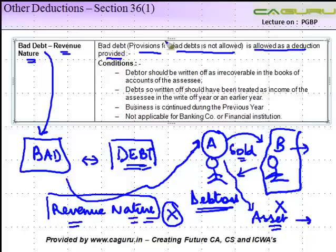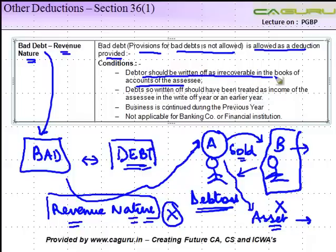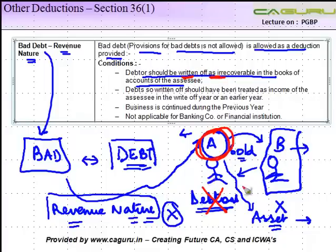So bad debts — provision for bad debts is not allowed. A provision for bad debt is nothing but a provision created in the books in case B does not pay up. What is allowed as a deduction is provided the debt should be written off as irrecoverable in the books of accounts of the assessee. Before A can claim a deduction for this debt, he needs to write off the amount receivable from B in the books — you have to show the balance of B as nil.